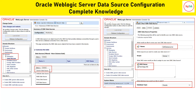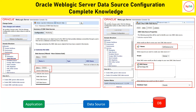Then you have to provide the JNDI name. This is a very important term when we go for any kind of resource configuration in WebLogic. JNDI stands for Java Naming Directory Interface — it is a kind of lookup service. It looks for different kinds of resources that you have configured in your WebLogic from your application. Your application needs a connection from the database, so the application connects to the data source, the data source connects to the database, executes the query, and the result returns back to your application.